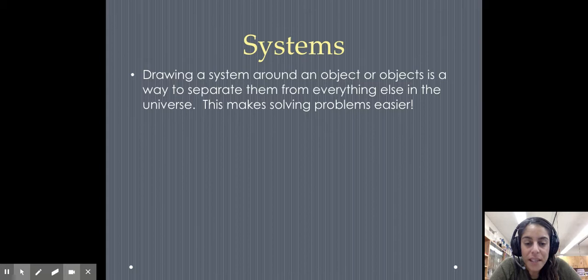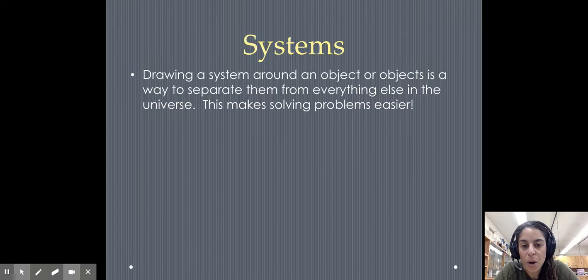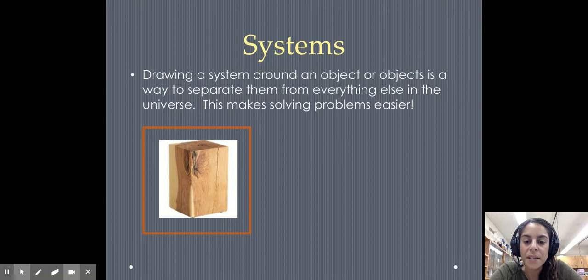So systems, when you're wanting to draw a system, there's something called an open system and a closed system. When you're drawing a system around an object or objects, there's a specific way to do that. And you're doing this to kind of separate them from everything else in the universe. This ends up making problems easier to solve.